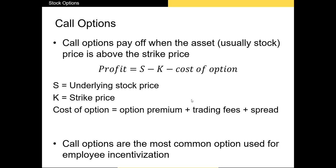The profit you make on a call option is determined by this simple formula: profit equals the market price of the underlying asset (S) minus the strike price (K) minus the costs associated with the option. These costs include the premium and any trading fees you pay to your broker. The bid-ask spread is also often thought of as a trading fee, and the spread for options can often be very wide, especially for options that are not widely traded.